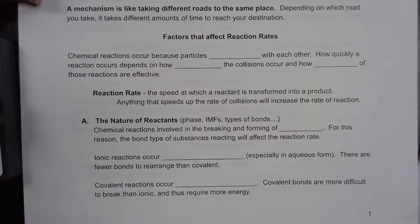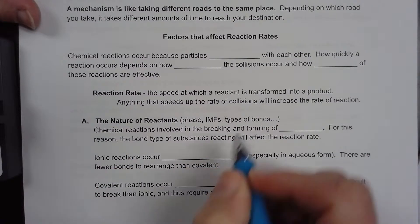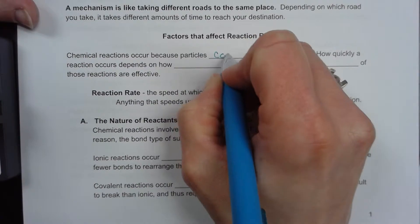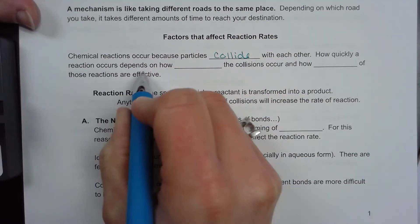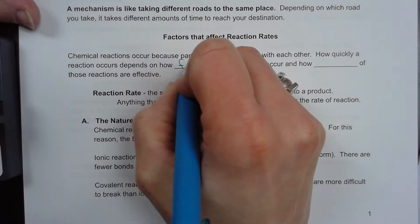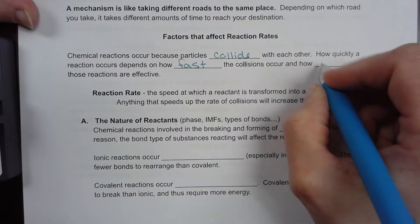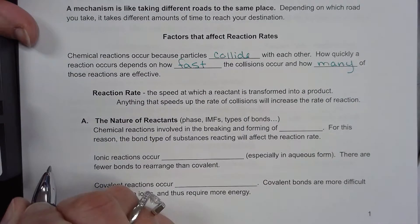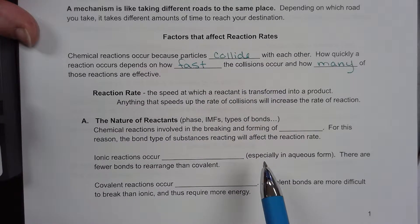We have quite a few factors that affect reaction rate and we're going to take them one by one. Chemical reactions occur because particles collide with each other. How quickly a reaction occurs depends on how fast the collisions occur and how many are effective. As we learned in the first part, we have to have effective collisions.